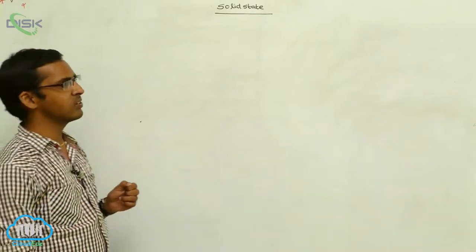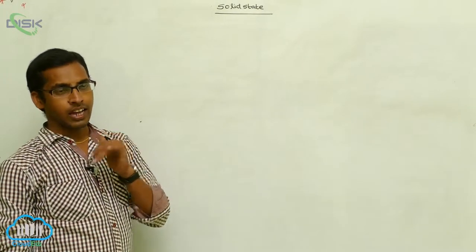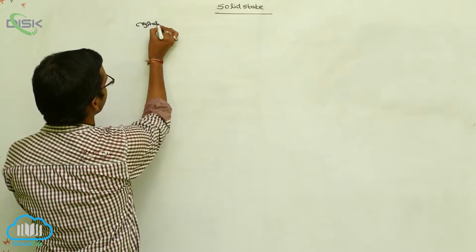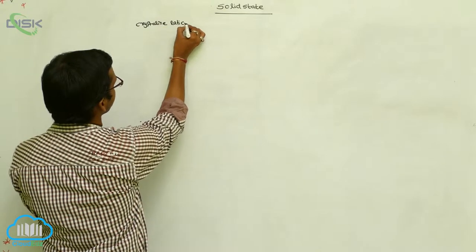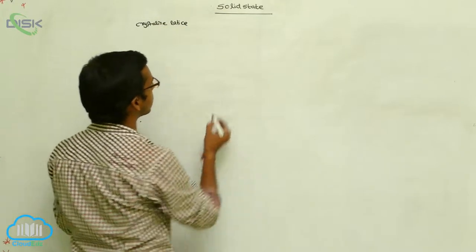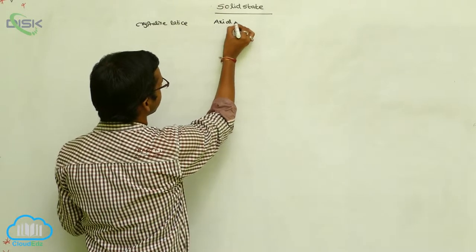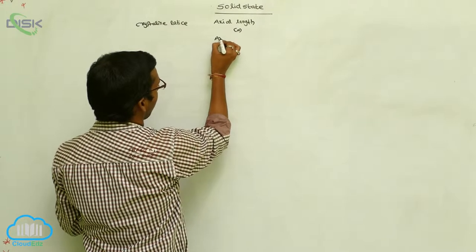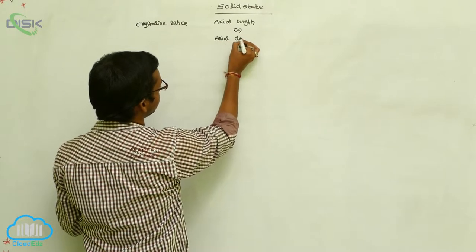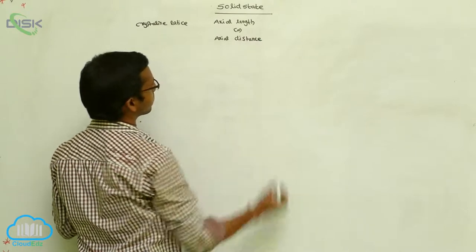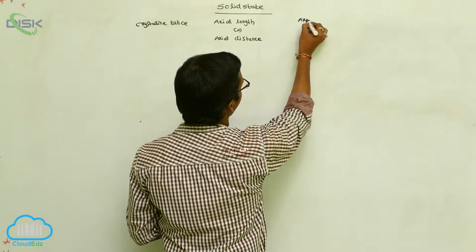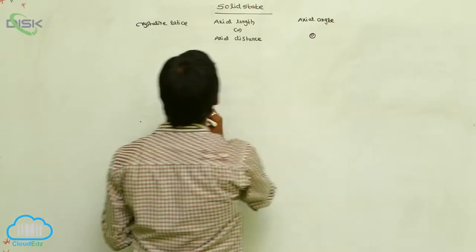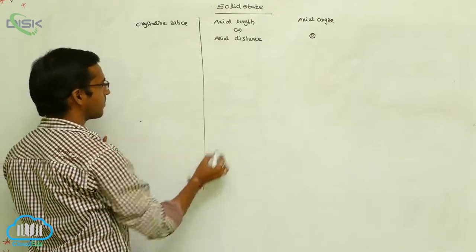We have discussed the primitive cells and centered unit cell types. For crystalline lattice, the key parameters are: axial length or axial distance, and axial angle theta.